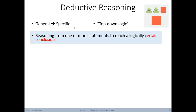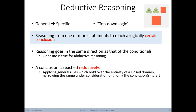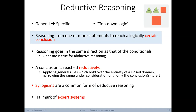Deductive reasoning goes from general to specific — also called top-down logic. It involves reasoning from one or more statements to reach a logically certain conclusion. Reasoning goes in the same direction as conditionals (if-then statements), which is opposite to abductive reasoning. A conclusion is reached by applying general rules that hold over the entirety of a closed domain, narrowing the range until only the conclusion remains. Syllogisms are a common form of deductive reasoning. Deductive reasoning is a hallmark of expert systems, a form of AI we'll focus on a lot in this course.